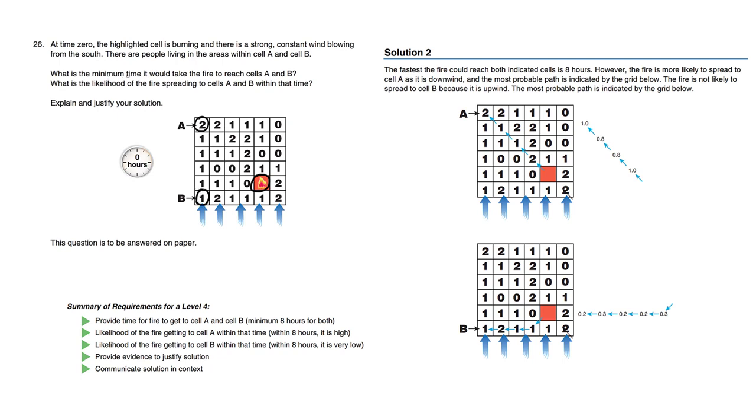What is the minimum time it would take the fire to reach cells A and B? What is the likelihood of fire spreading to cells A and B within that time?